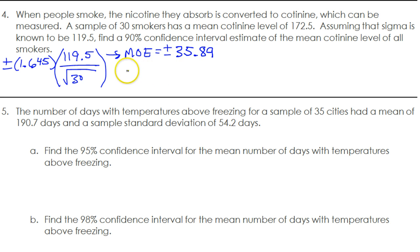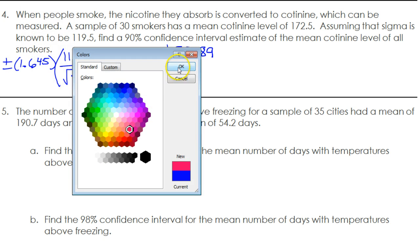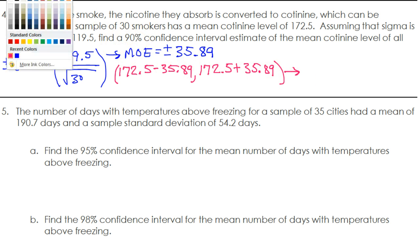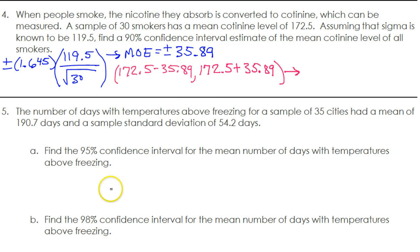So to build my interval, I'm going to take this and add and subtract from the sample mean. The sample had this mean. So I'm going to take that mean of 172.5 and I'm going to subtract the margin of error and I'm going to add the margin of error. That should give us the actual 90% confidence interval.